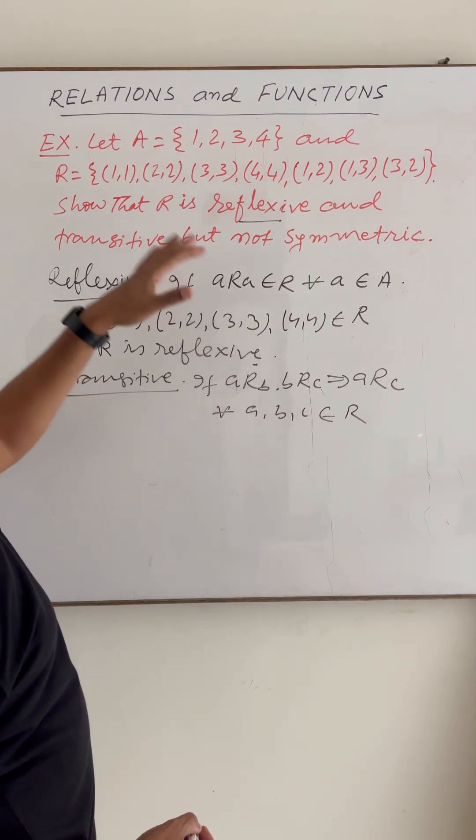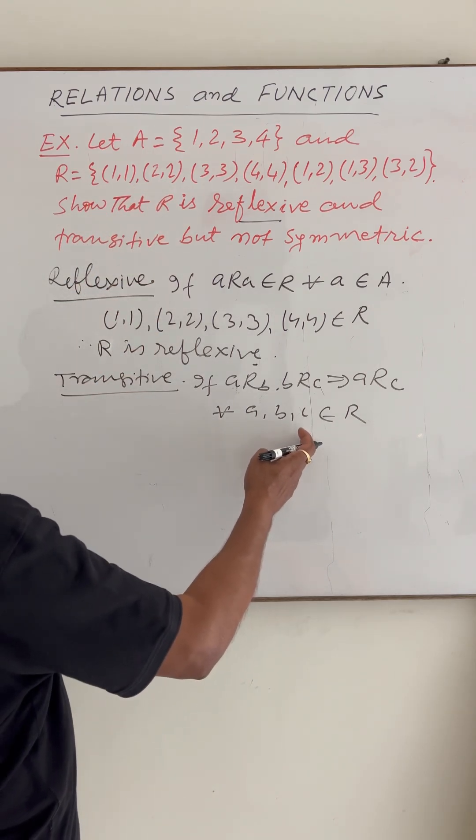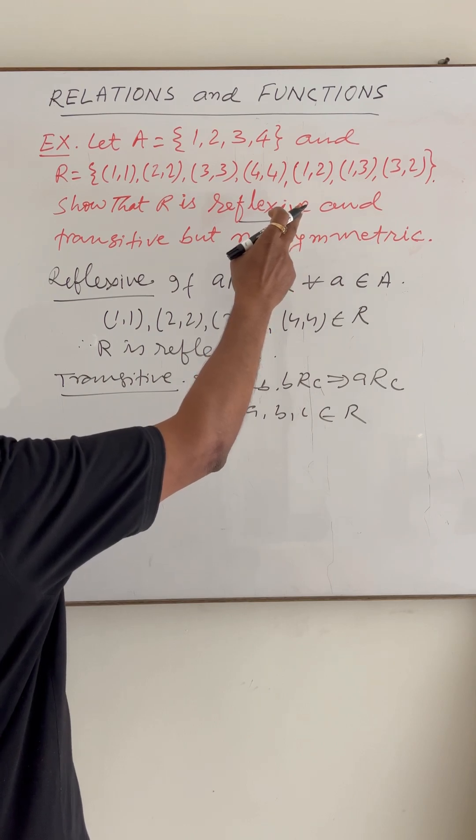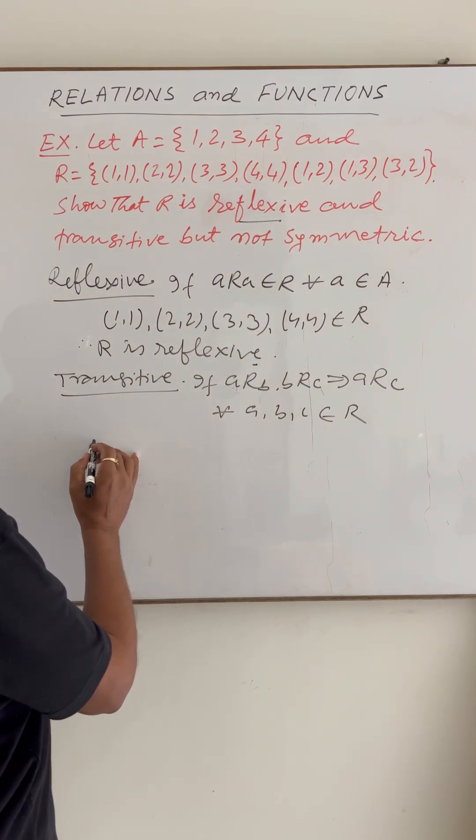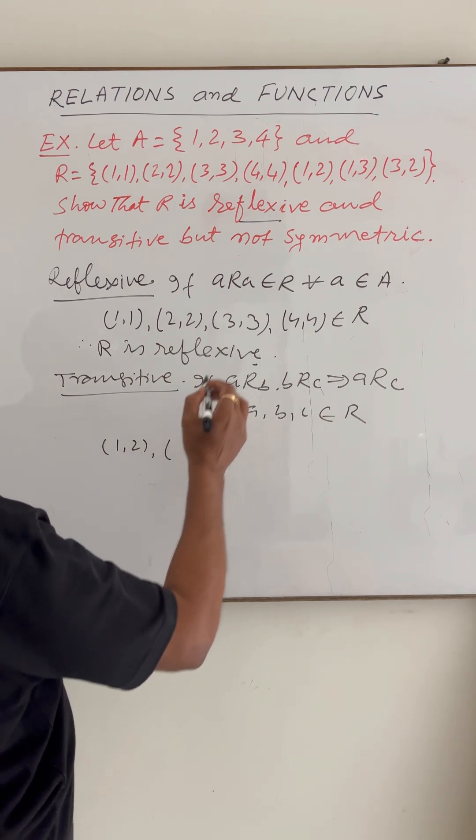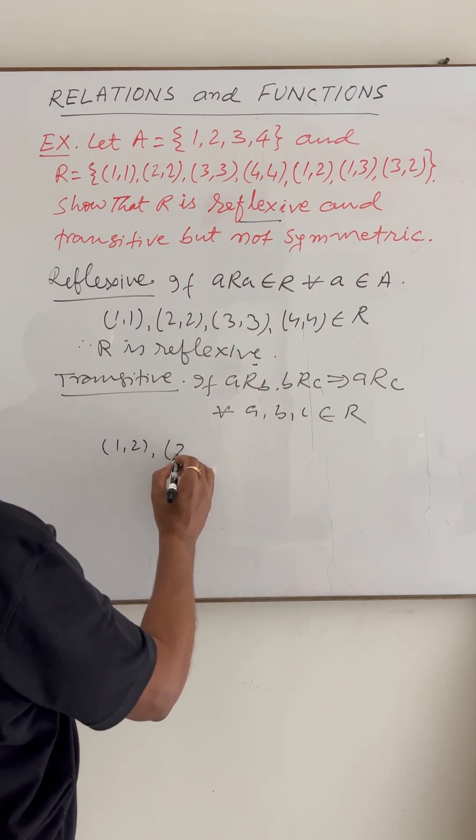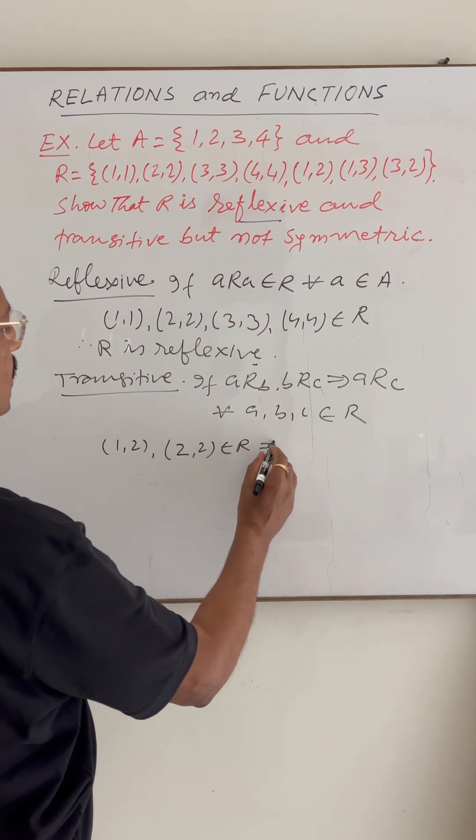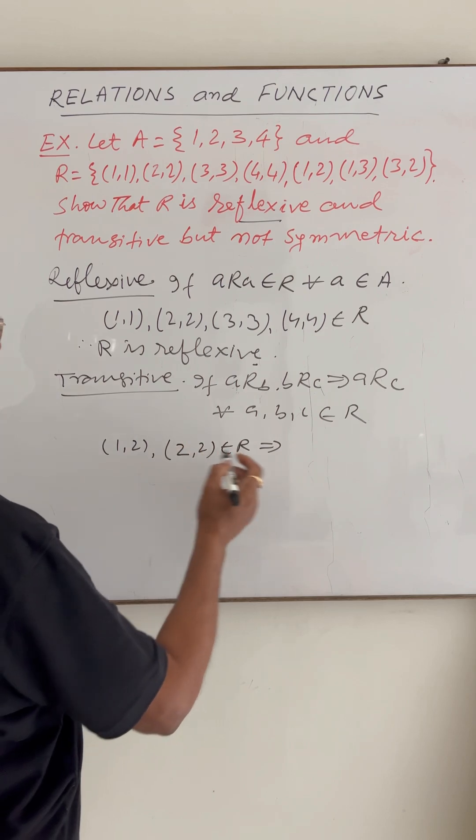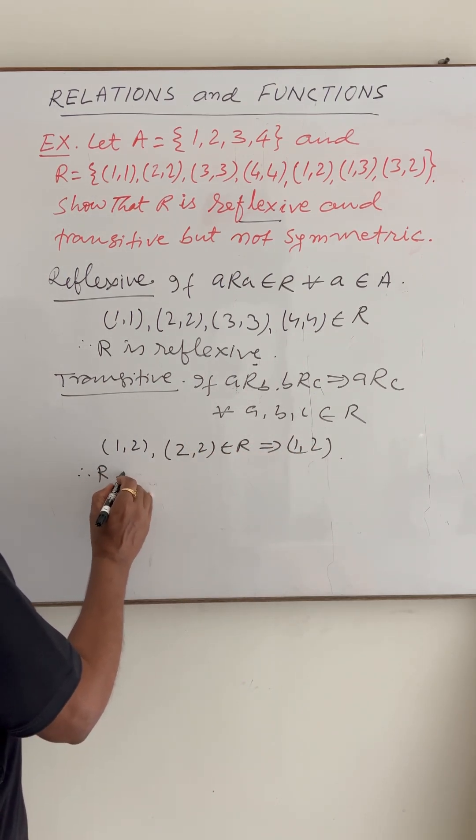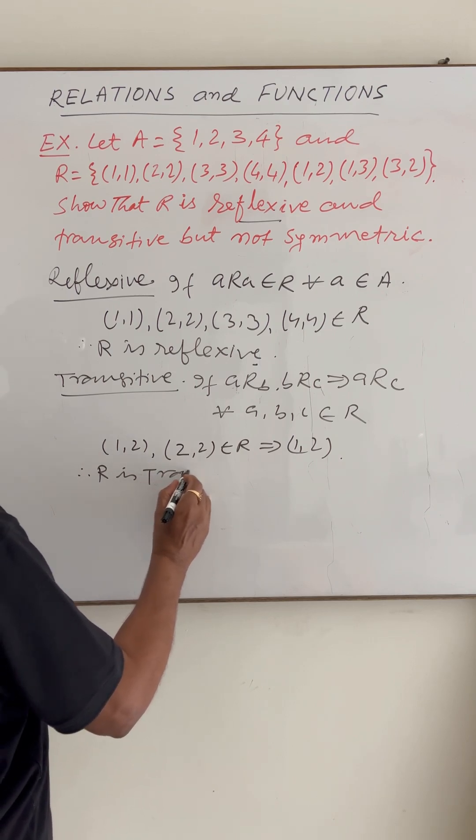In this case, elements are given here and you can take any elements A equals, B equals, C equals and will show that this relation is holding here. As for example, if you take (1,2) and you take (2,2) belonging to R, this also implies that (1,2) belongs to R. So therefore, this relation is transitive.